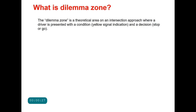Dilemma zone is defined as the area where drivers approaching a signal control intersection must decide either to stop or to proceed at the onset of yellow indication. Drivers that might perceive themselves to be too close to an intersection for a safe stop, or too far to proceed without violating traffic regulations, are the drivers caught in the dilemma zone.